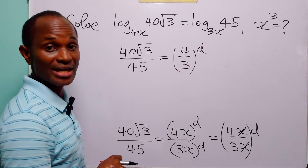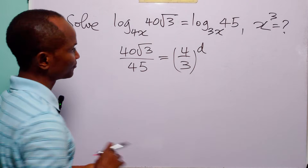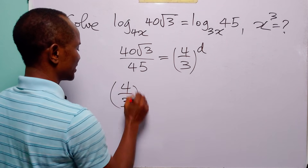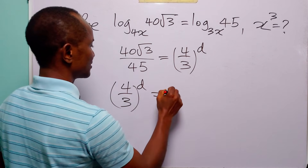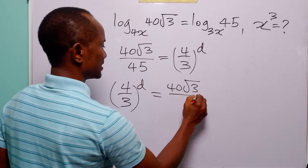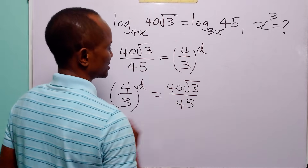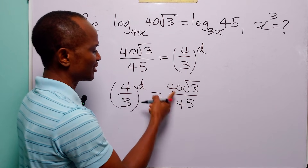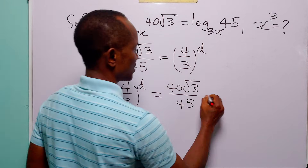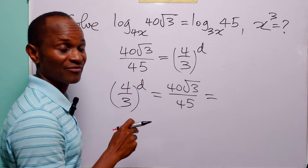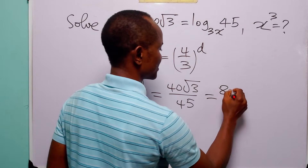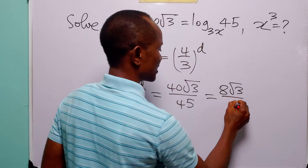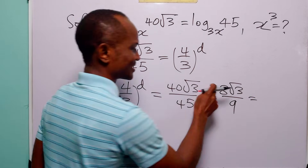For convenience, let us rearrange: (4/3) to the power d is equal to 40√3 divided by 45. We can reduce this fraction by dividing both numerator and denominator by 5. That gives us 8√3 divided by 9.